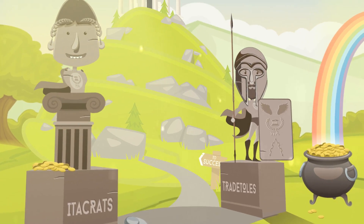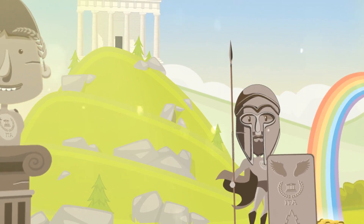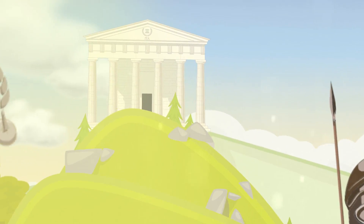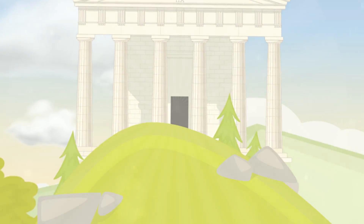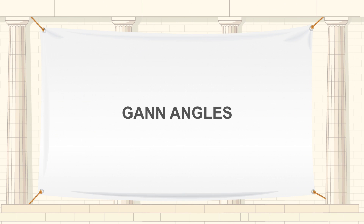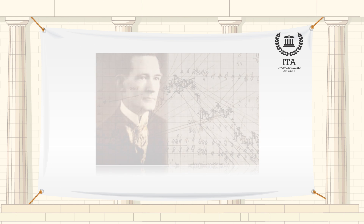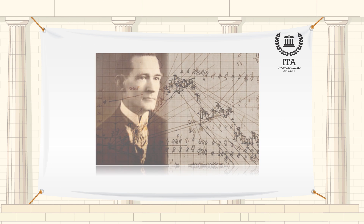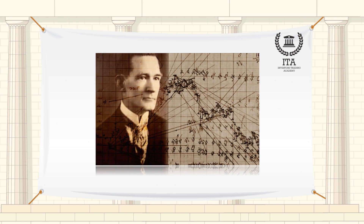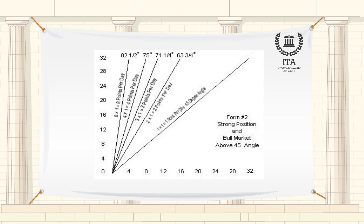Welcome to the Investors Trading Academy talking glossary of financial terms and events. Our word of the day is Gann Angles. W.D. Gann created a method of predicting price movements through the relationship of angles on charts. There are many variations of Gann's theory.